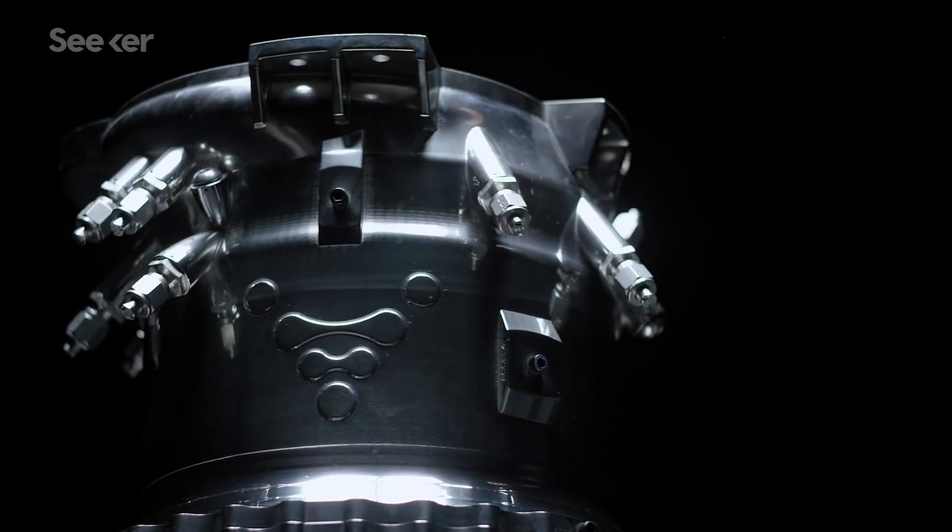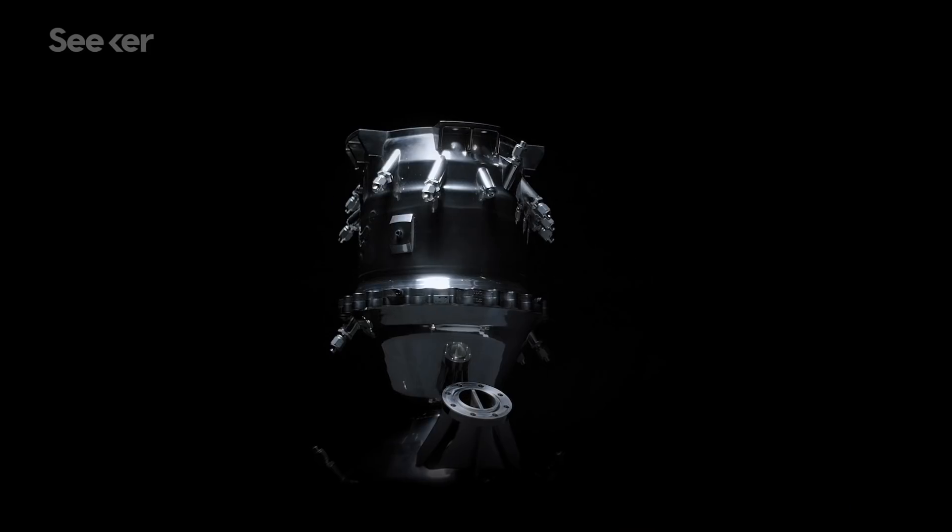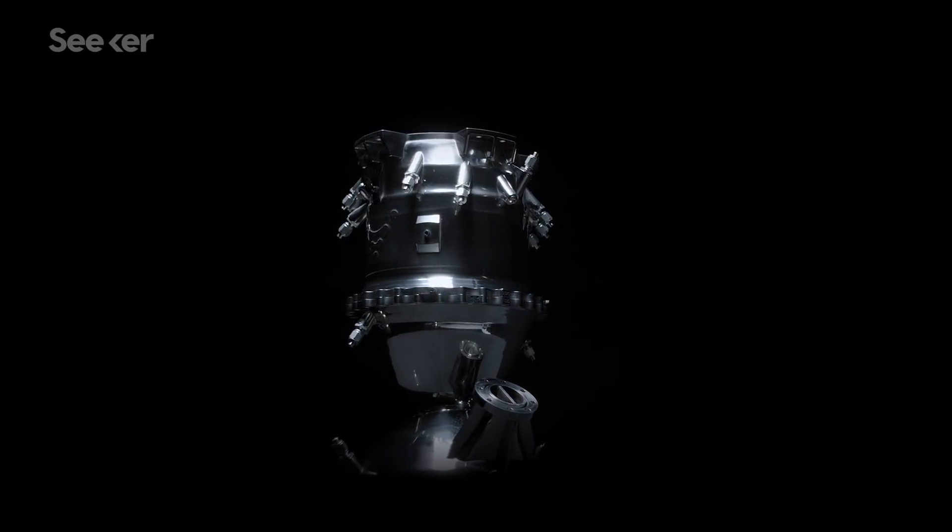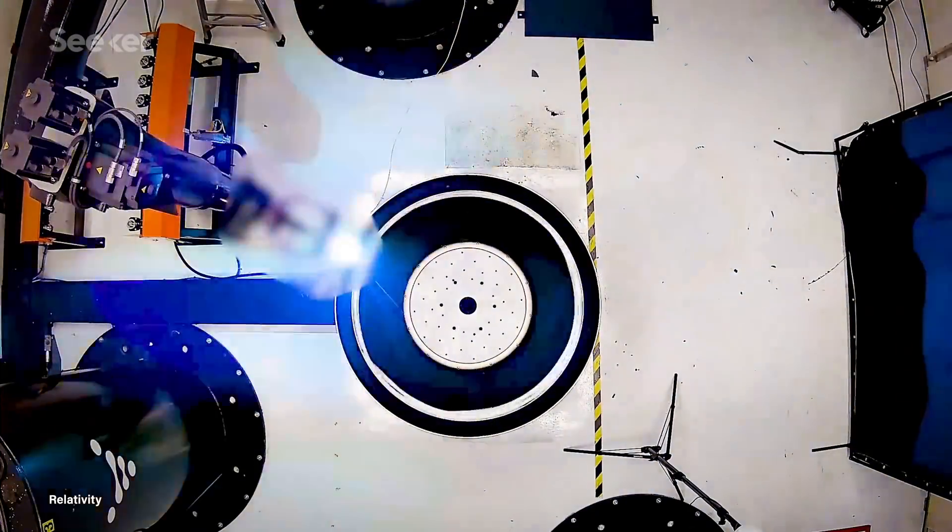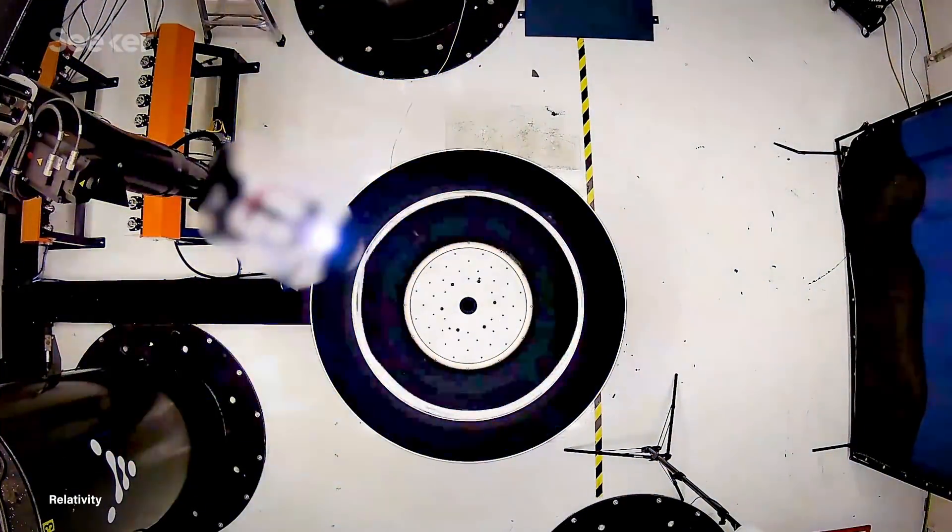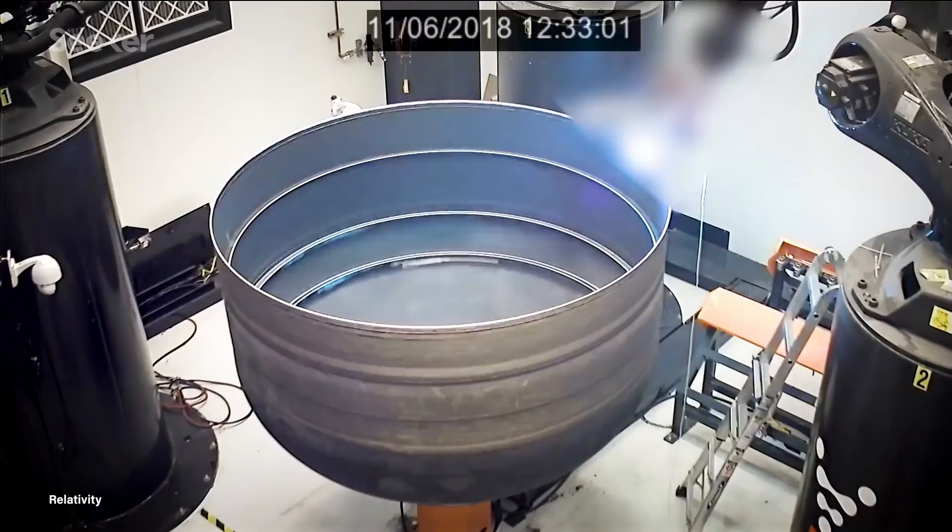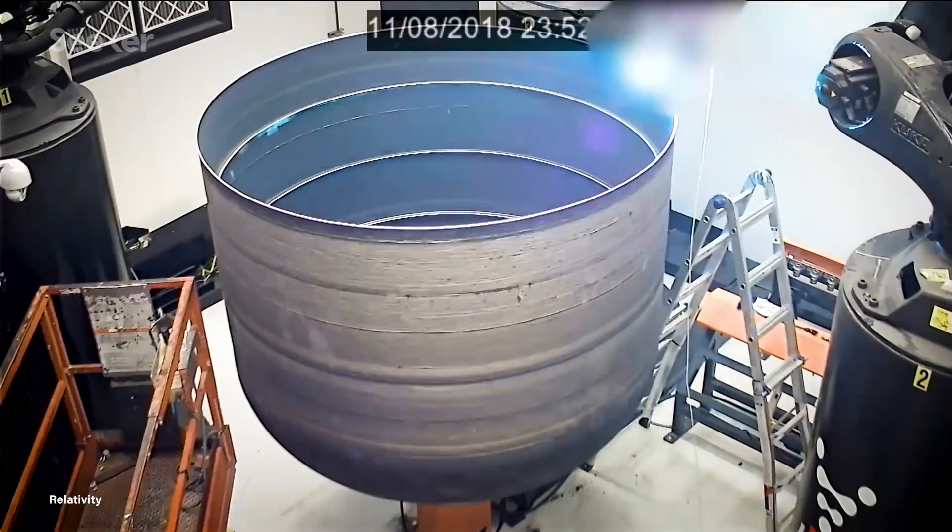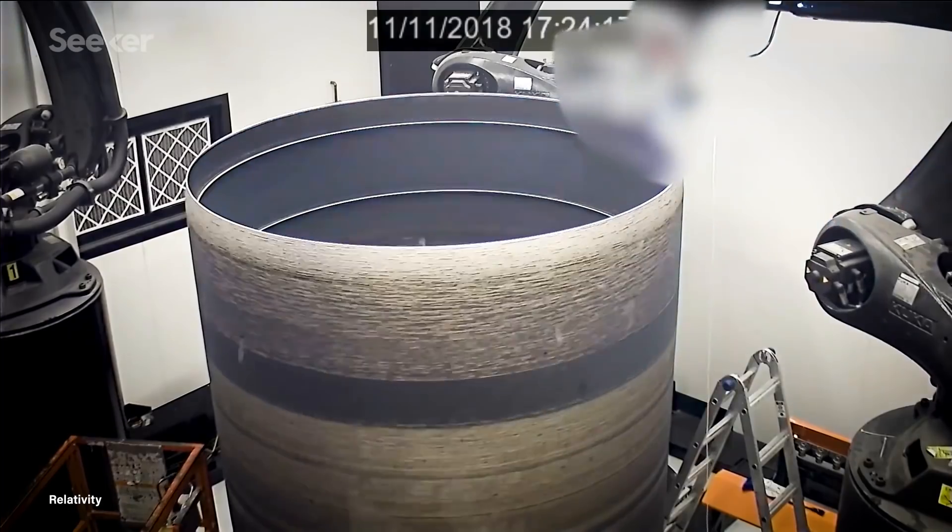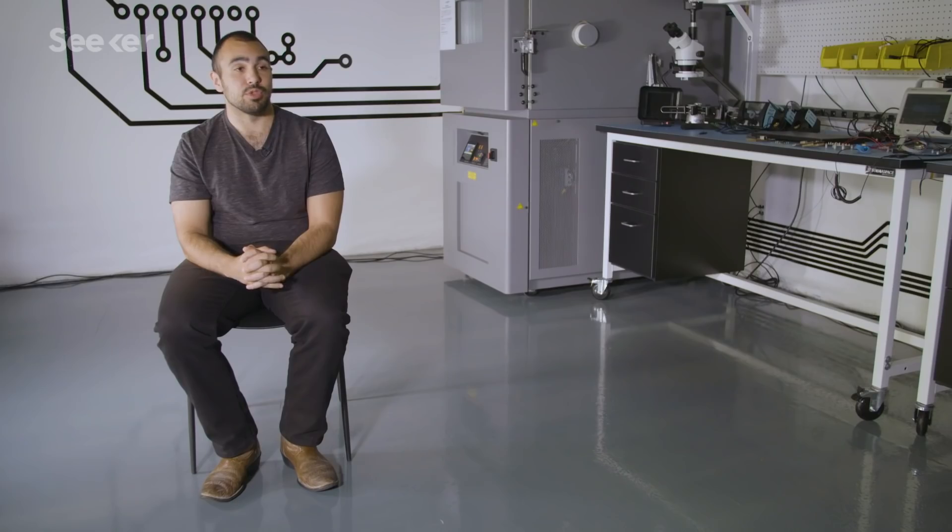And to make these future parts, Relativity leans in on some key printing techniques. Stargate uses a direct energy deposition method where you're actually feeding a wire into a melt pool and moving that process around. Stargate prints the majority of the structural components on the rocket, and that includes not only the propellant tanks, but the structural attachments, the payload encapsulation fairing, and all of the pieces that aren't the engines on the rocket.